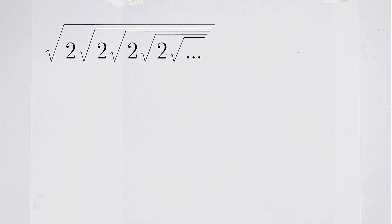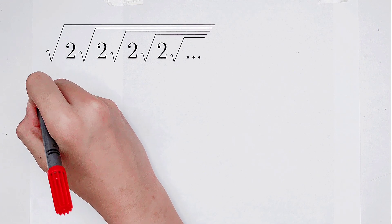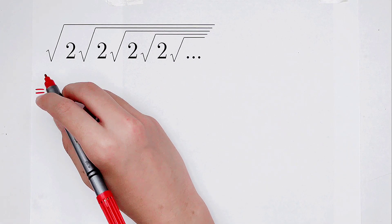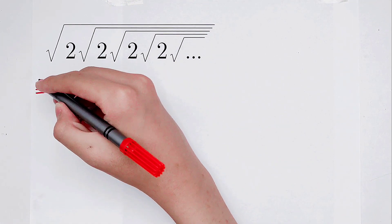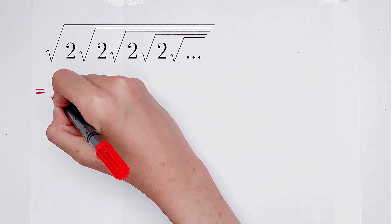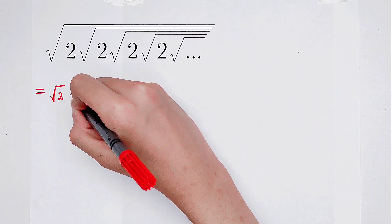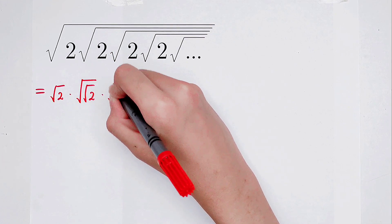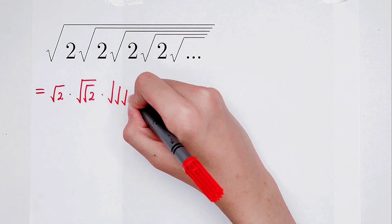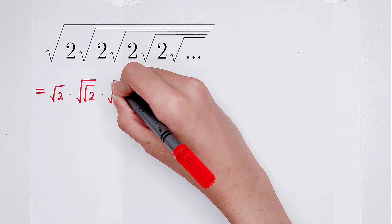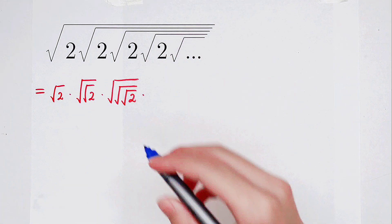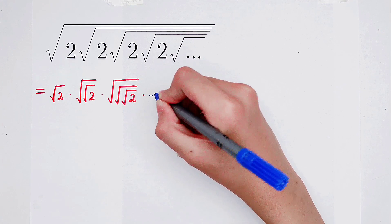For dealing with this question, I can regard this as a multiplication. It can be regarded as the multiplication of the square root of 2 times the square root of the square root of 2, and then times the square root of the square root of the square root of 2, and so on.